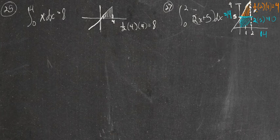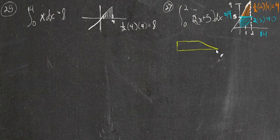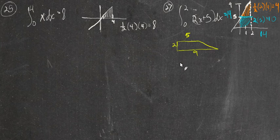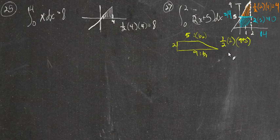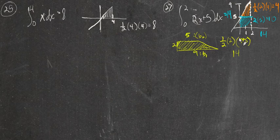Another way to do it: the entire shape is a trapezoid. Laying it on its side, one parallel side is 5 and the other is 9, and the height is 2. The area of a trapezoid is 1/2 times height times (base 1 + base 2): 1/2 · 2 · (9 + 5) = 1 · 14 = 14. That's the area of the trapezoid, which is the area under the curve, which is 14. So the definite integral from 0 to 2 of 2x + 5 dx equals 14.